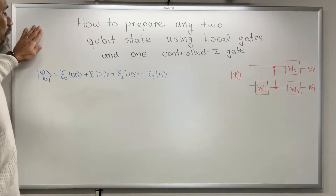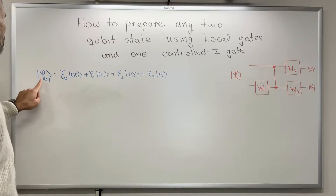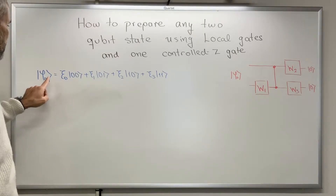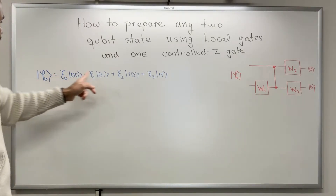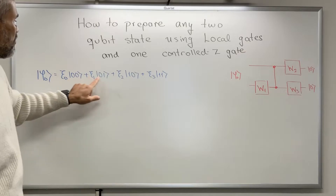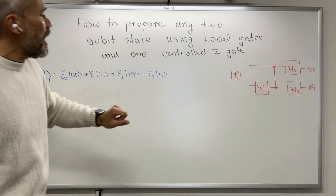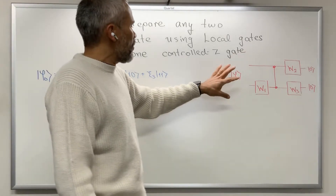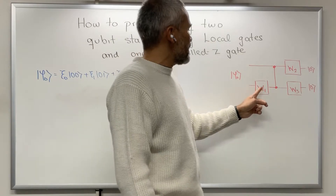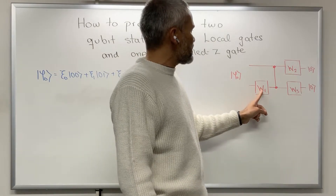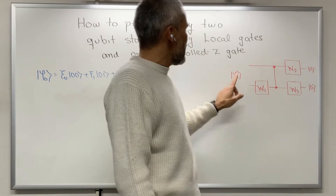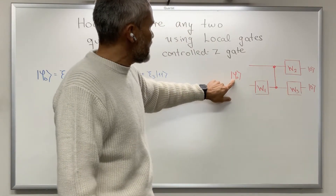In this video we're going to explain how to prepare any two-qubit state. Any two-qubit state looks like this — these are the amplitudes — and we're going to create explicitly local gates W1, W2, and W3 such that this two-qubit state is taken into the state |00⟩.